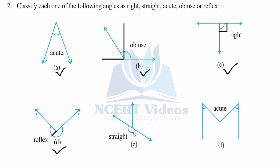Part e is very simple — it lies on a straight line, therefore it is a straight angle, or 180 degrees. Part f is similar to part a — both angles shown are less than 90 degrees. This is your 90 degree reference, and both lie below it, therefore both angles in part f are acute angles. That is how you do question number two.